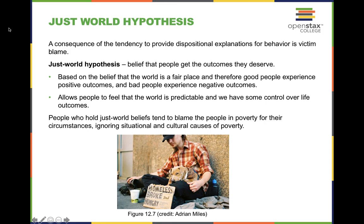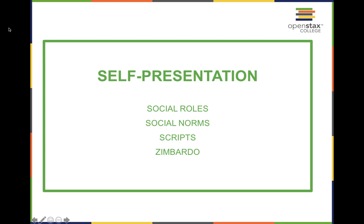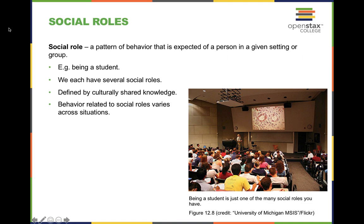Let's talk about self-presentation, including social roles, social norms, scripts, and Philip Zimbardo's Stanford Prison Experiment. A social role is a pattern of behavior expected of a person in a given setting or group. We all have different roles and different hats we put on in certain situations — student, father, teacher, fast food worker — all identity roles that shape how we act.